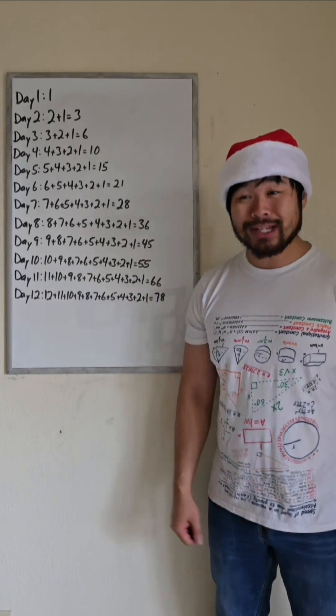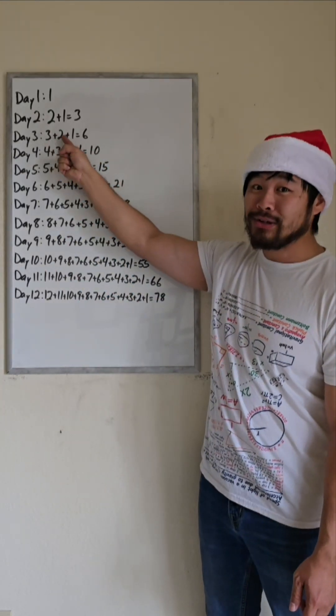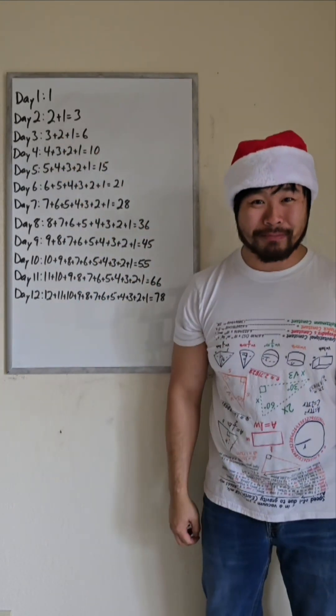For example, on day three, they are receiving six gifts. Three French hens, two turtle doves, and a partridge in a pear tree.